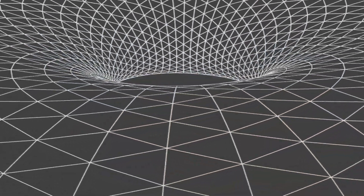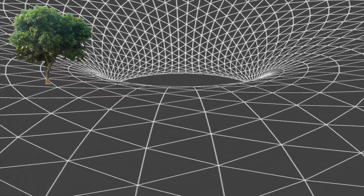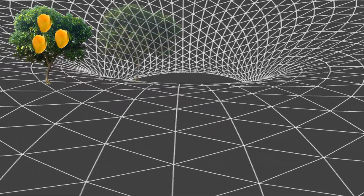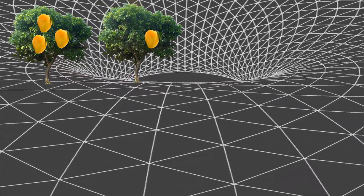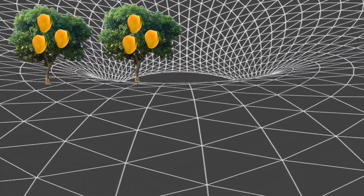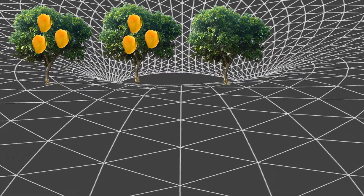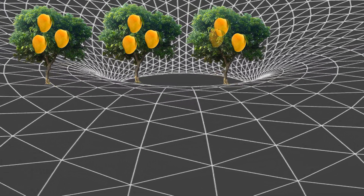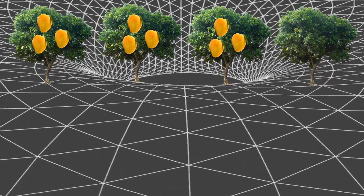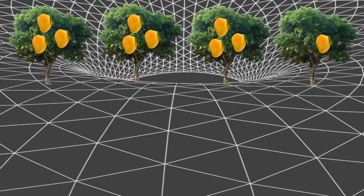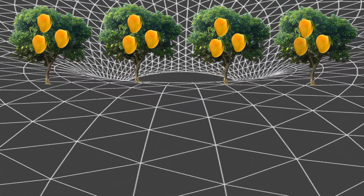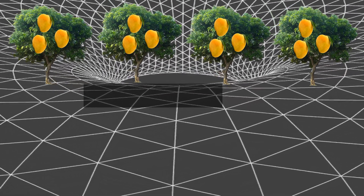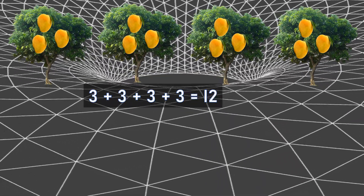Let's see one more example. Here I have one tree which has three mangoes. One more tree with again three mangoes. One more tree — that's a third tree — again with three mangoes. Once again we have one more tree with three mangoes. So now in a repeated addition we are going to count how many mangoes we have in total.